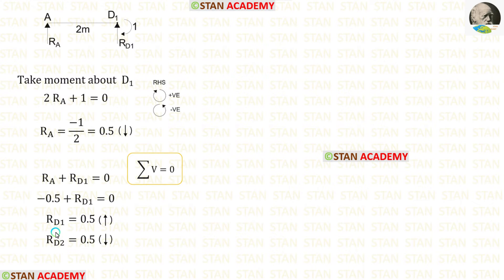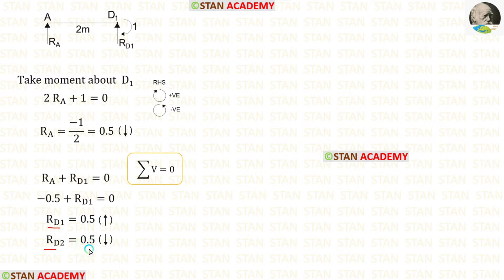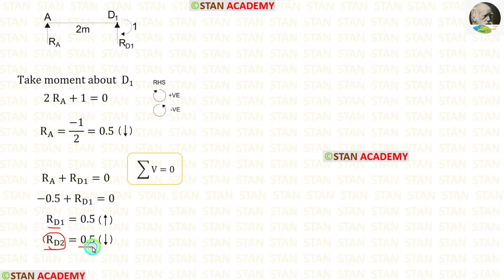We can calculate RD2 also. The values of RD1 and RD2 will be the same, but they will be acting in different directions. So the value of RD2 will also be 0.5, but it will be acting downwards.